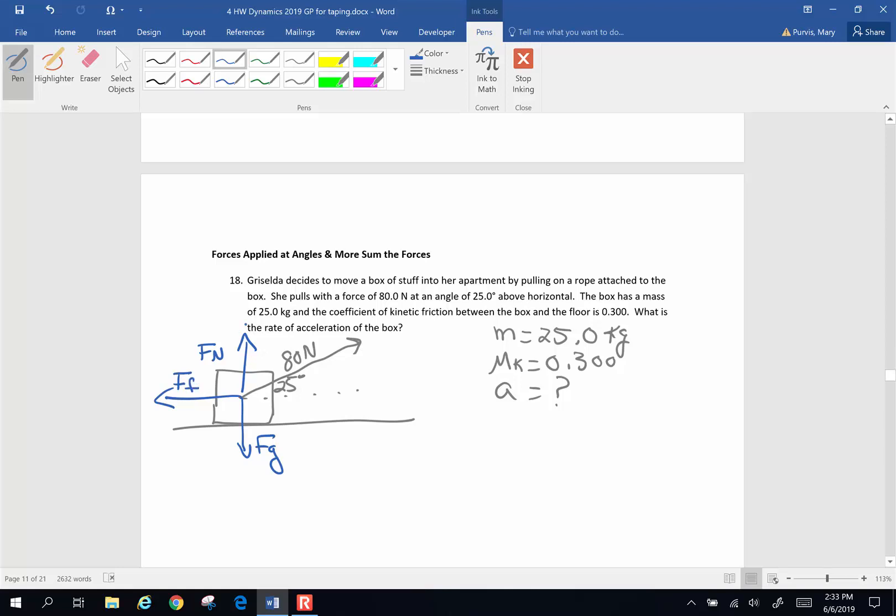Now our goal when we do problems is to get all of our forces in an x and y plane. So if you ever have a force that's up at an angle like this, you have to break those into components. I'm going to make a triangle out of this. The force parallel is going to be 80 newtons times the cosine of 25 degrees. And the force perpendicular is going to be 80 newtons times the sine of 25 degrees.